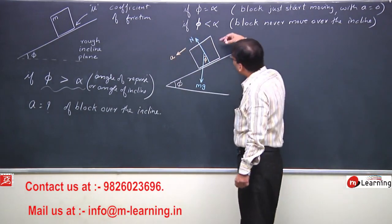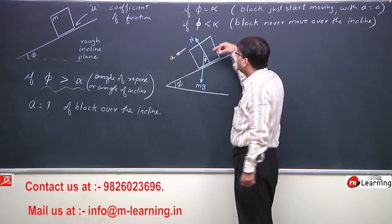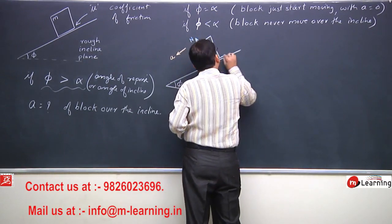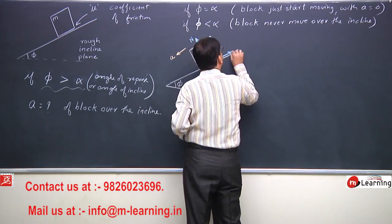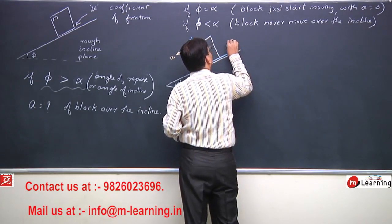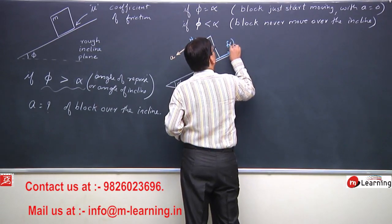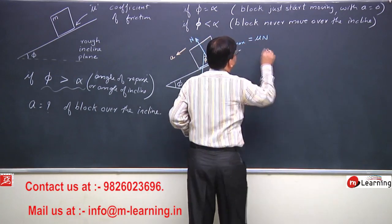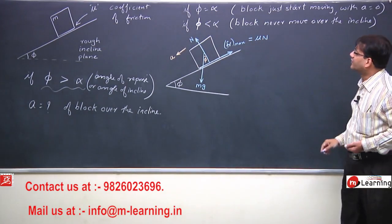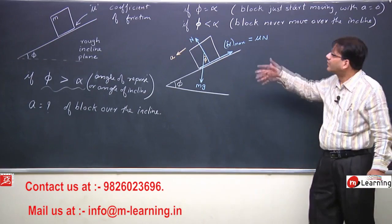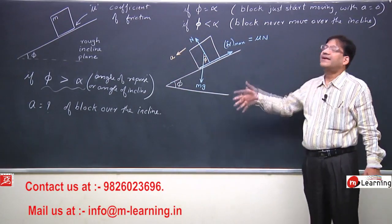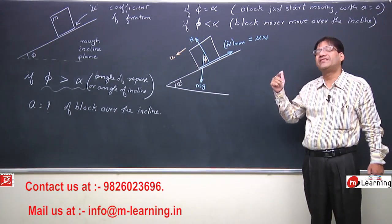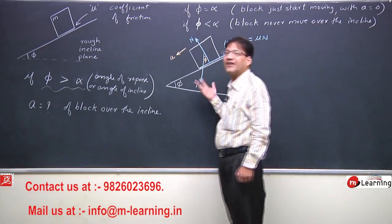The acceleration of the block is down the inclined plane. Since the block is moving in this direction, the inclined plane offers a frictional force on the block against the direction of motion. This frictional force is the maximum frictional force, equal to mu into N. Kinetic friction acts, and the maximum kinetic friction is mu into N, where mu is the coefficient of kinetic friction.